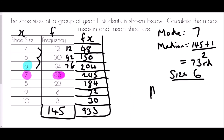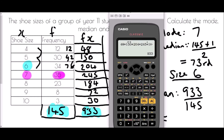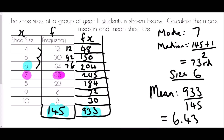To work out the mean, I take the total of fx and divide it by the total frequency — the total of all shoe sizes divided by the total number of people. Using the calculator: 933 divided by 145 gives 6.43 to two decimal places. That seems a bit unusual since you can't have a size 6.43 shoe, but because it's a mean, decimals are absolutely fine.